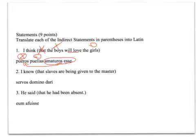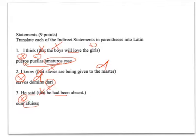'I know that the slaves are being given to the master.' 'That' is not translated. The subject is in the accusative. 'Are being given' is present passive, so I use a present passive infinitive. 'To the master' is dative, so I put 'to the master' in dative. 'He said that he had been absent.' 'That' is not translated. He is the subject, so I put that in the accusative. To get a 'had been' translation, I have a perfect main verb and a perfect infinitive — and that's what I use to get that translation.